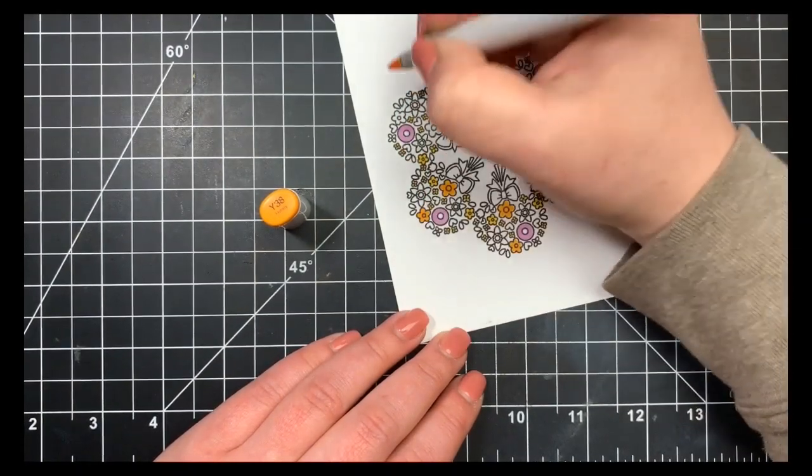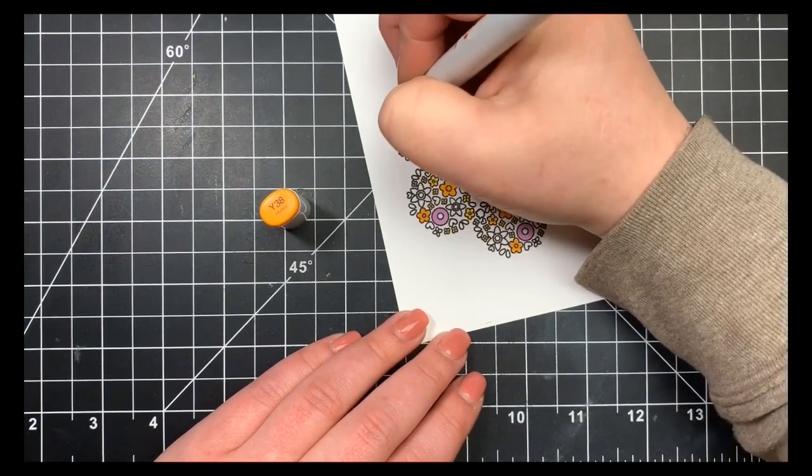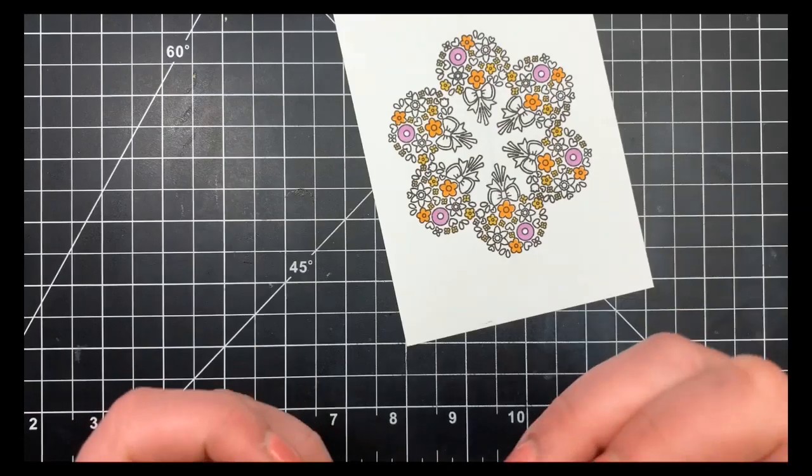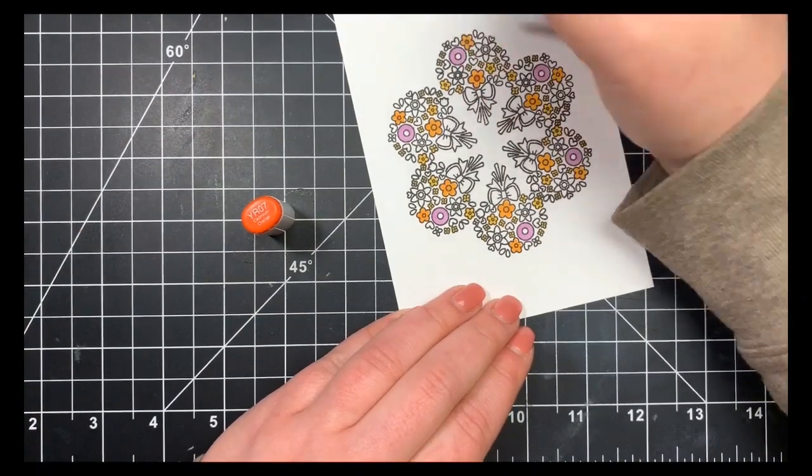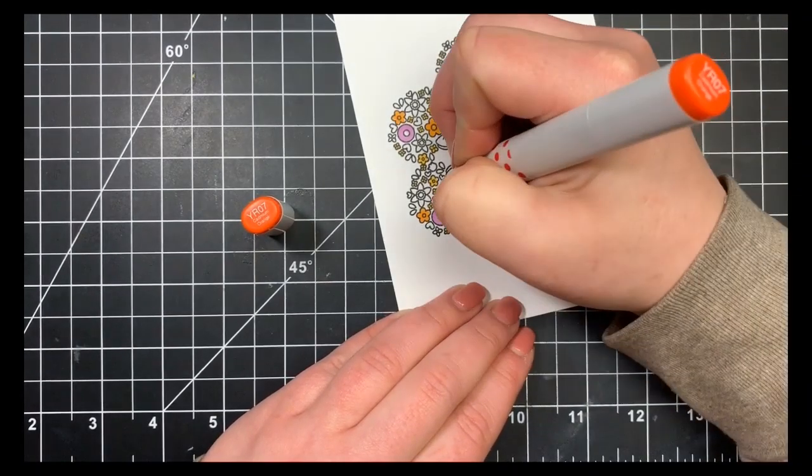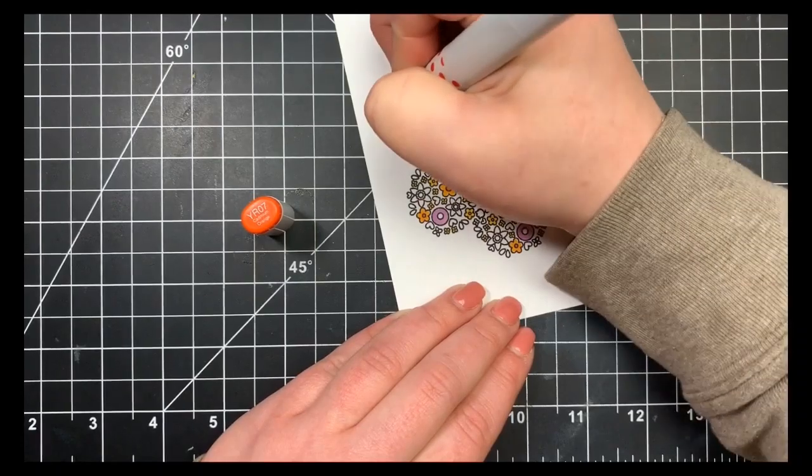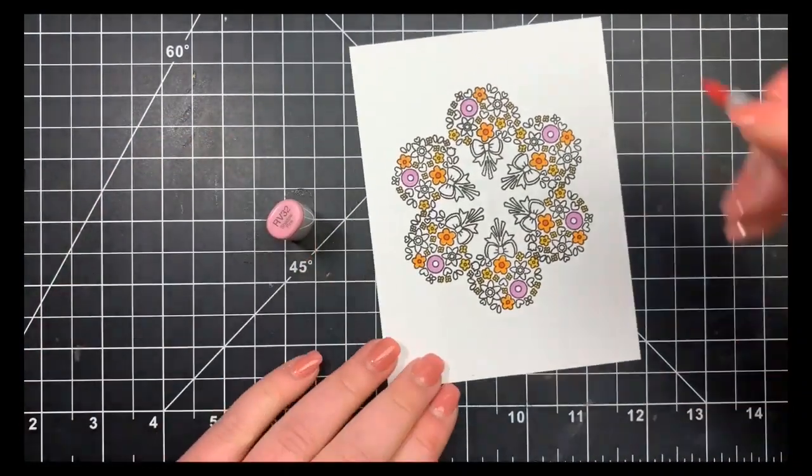If you have to go back in and fix up any areas, you can, but it's better to put too little on than too much. Moving on to the Y38—this is a yellow but more of an orangey color—I'm bringing in a darker orange, a YR marker, to fill in the centers of those flowers.